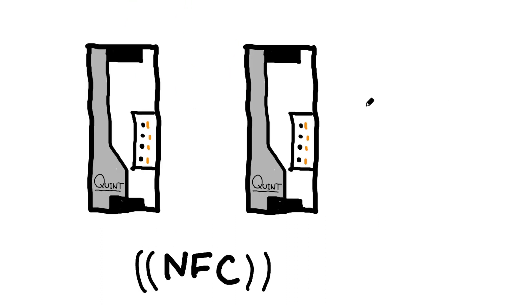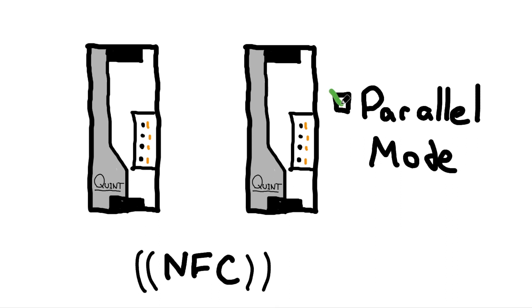The QUINT power supplies can be configured to run in parallel mode. This allows them to cooperate more efficiently without actually passing data back and forth.